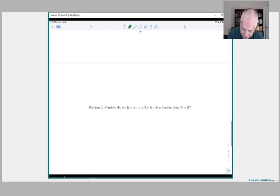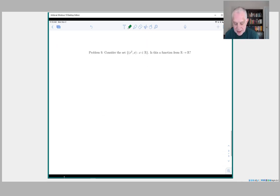And for our last one, the question is, suppose we look at the set of pairs consisting of x squared x for x in R and we ask, is this a function from R to R? And this is one where I think the easiest thing to do is to try to plot the subset.